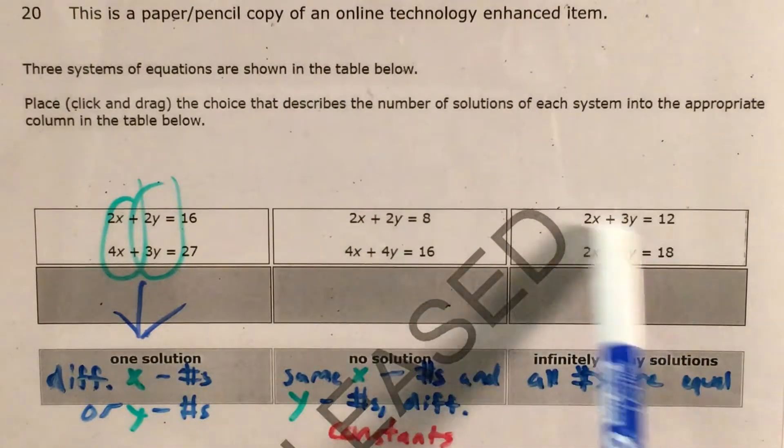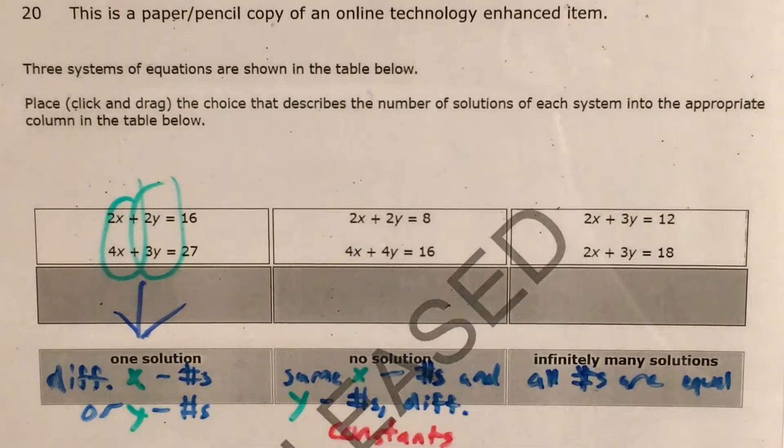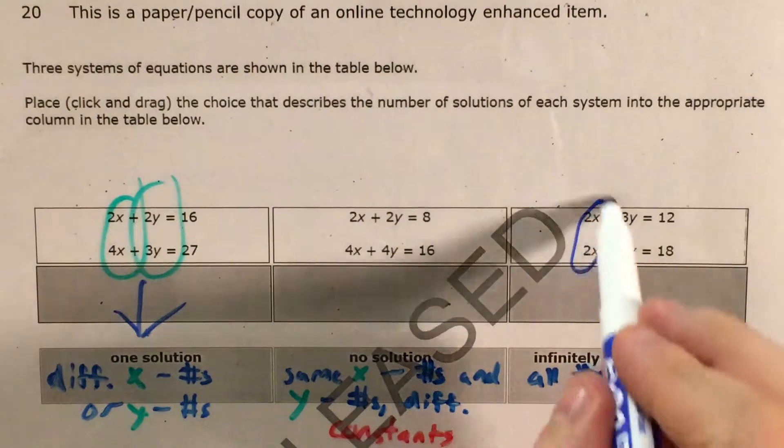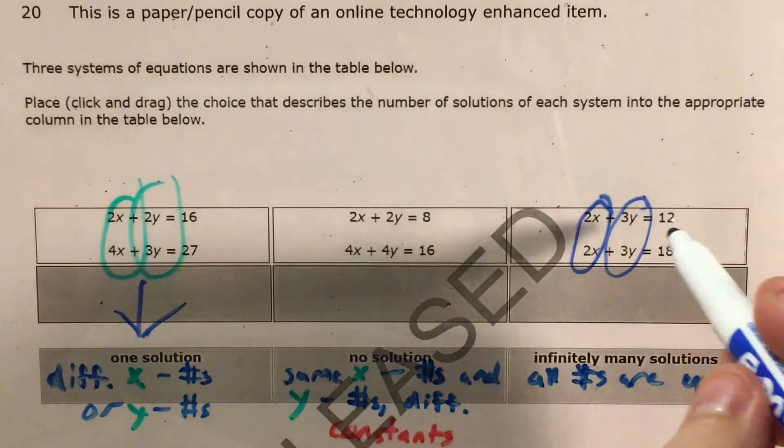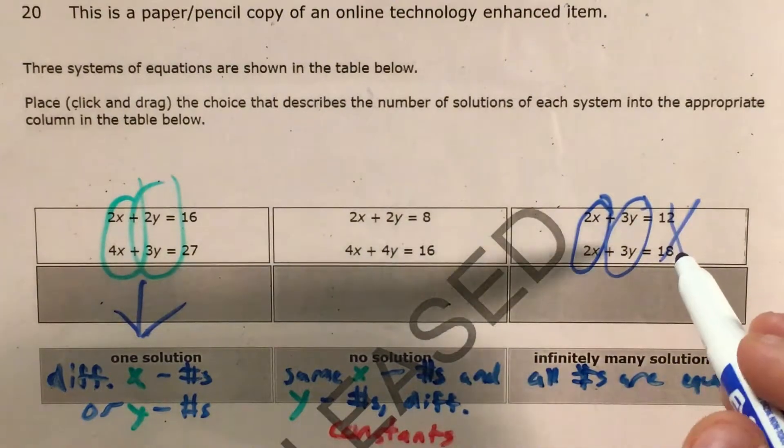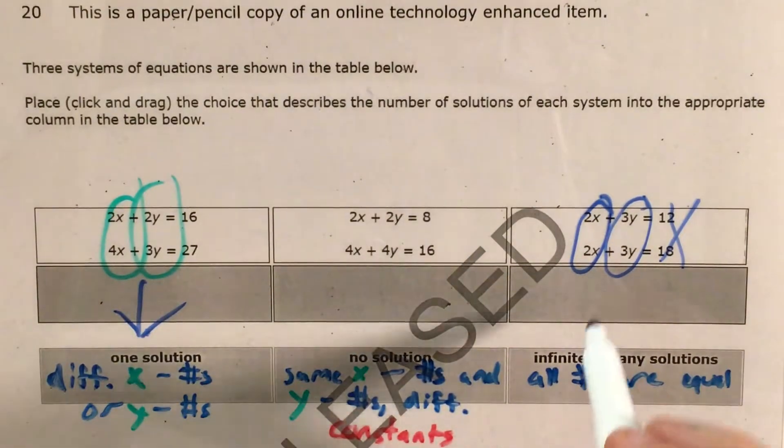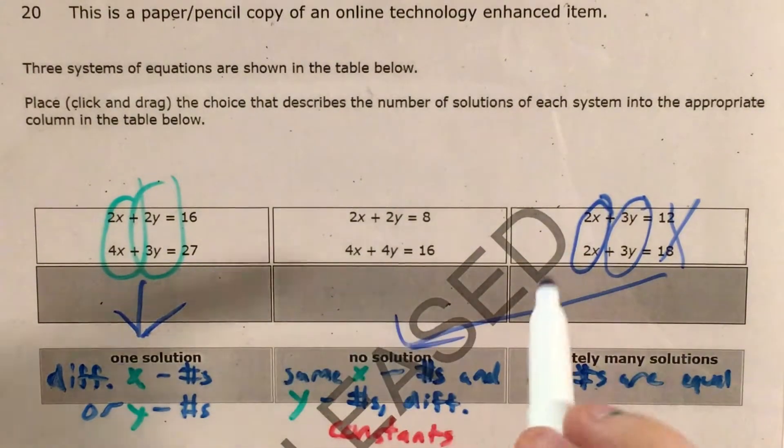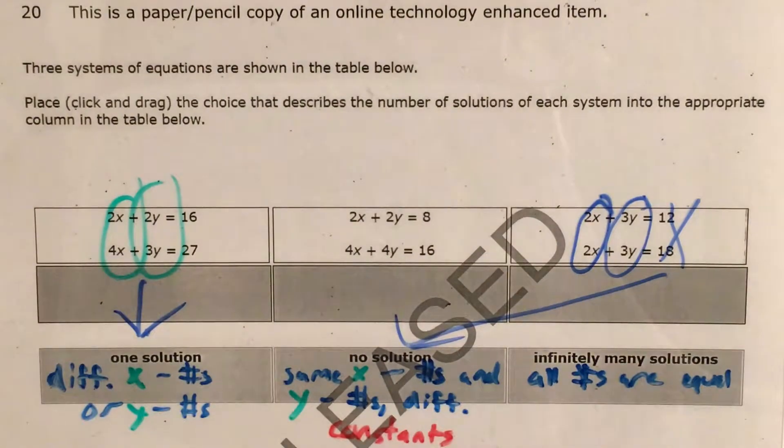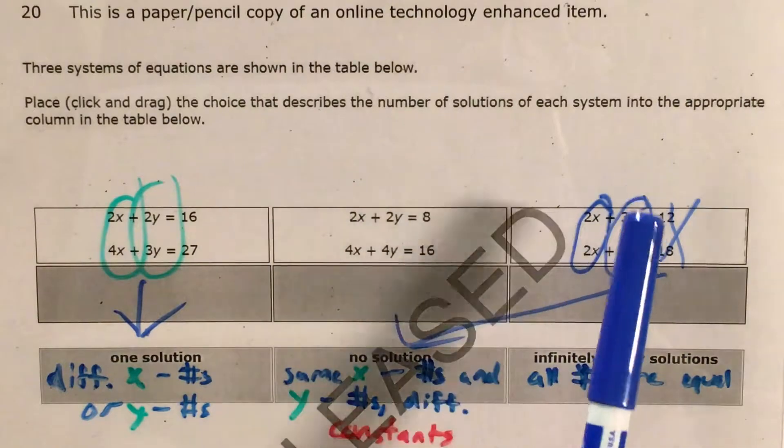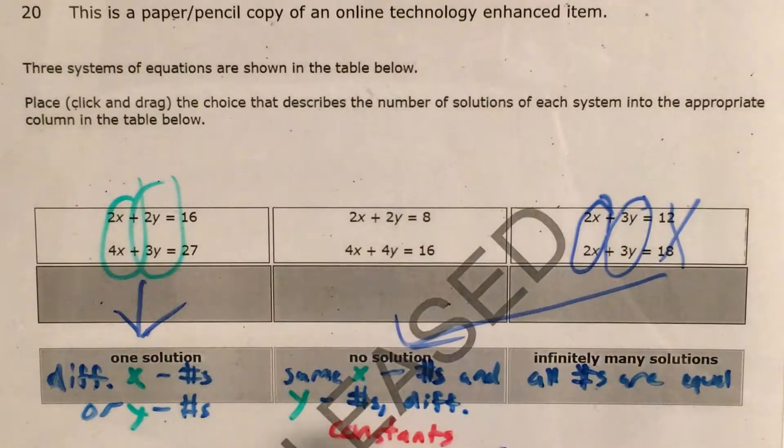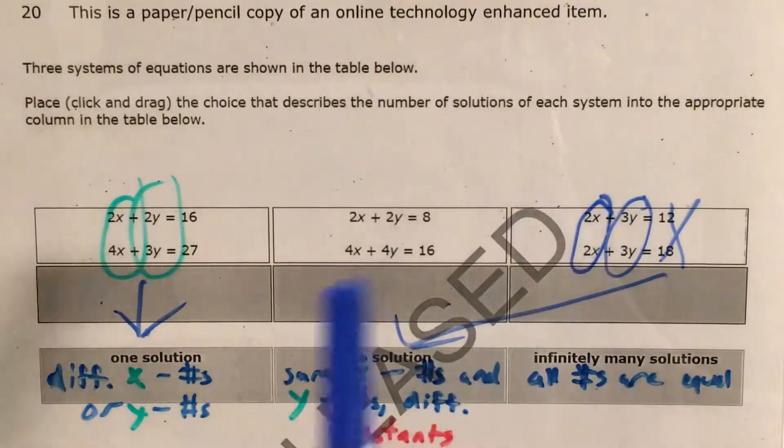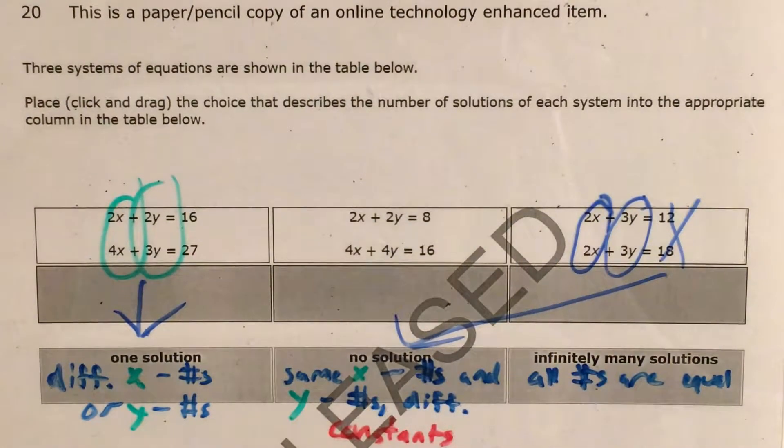So in the case over here, our x coefficients are both 2, our y coefficients are both 3, but now we have different constants. The numbers that are just hanging out by themselves are different, which means this system has no solution. There is no pair of x numbers and y numbers that I can plug into both these equations at the same time and get 12 out of one and 18 out of the other, because they're the exact same on one side of the equals sign.